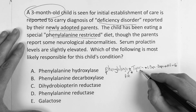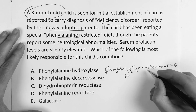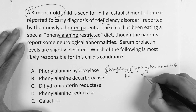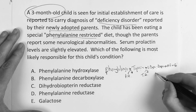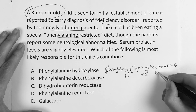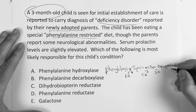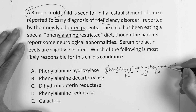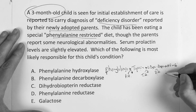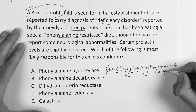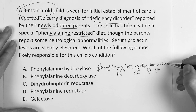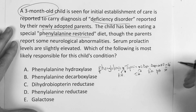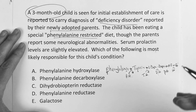Tyrosine to L-DOPA is tyrosine hydroxylase. L-DOPA to dopamine is DOPA decarboxylase. Dopamine to norepinephrine is dopamine beta-hydroxylase. And then norepinephrine to epinephrine uses phenylethanolamine N-methyltransferase and SAM. You know those because we've done them repetitively.